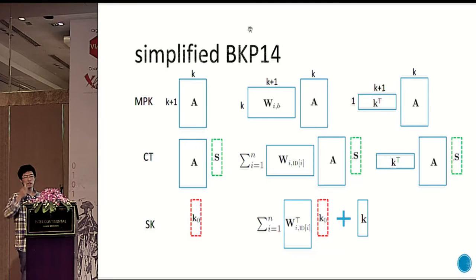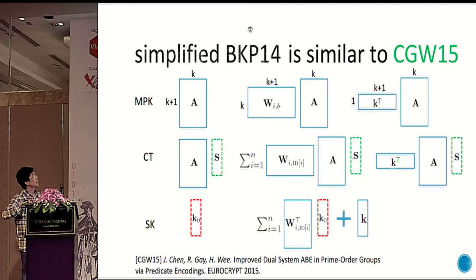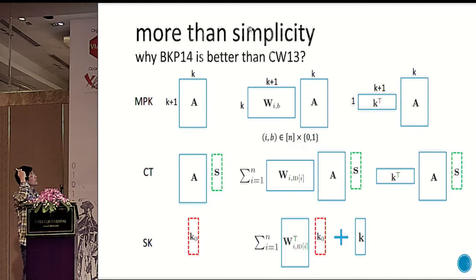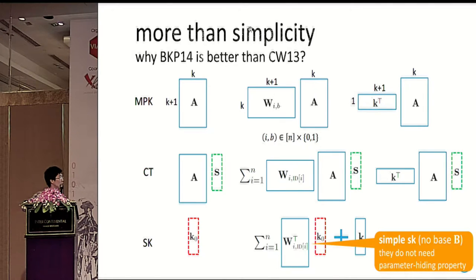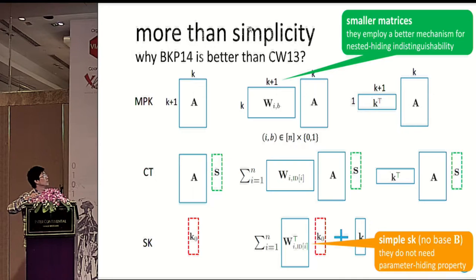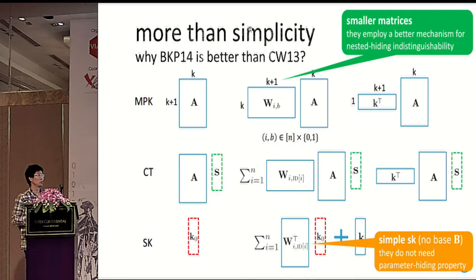We give a picture — this picture apparently appeared in yesterday's invited talk by Hotek. It is quite similar to the CGW paper published at Eurocrypt. Someone asked me why BKPS is better than CW — I said it is a newer scheme. But with this similarity we can say more. The secret key is much simpler because we do not need a parameter-hiding property here. Also, the matrix is smaller because they use a more powerful tool to realize nested hiding distinguishability — they only need to hide k-unit entropies. So we can give concrete reasons for that.